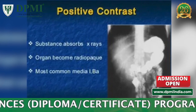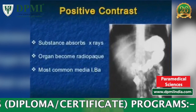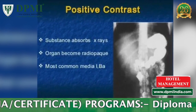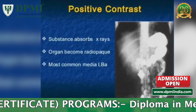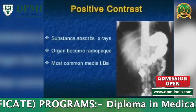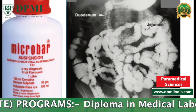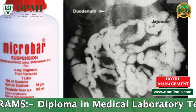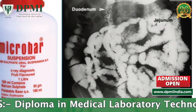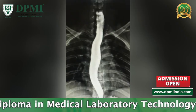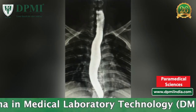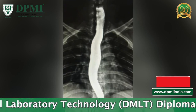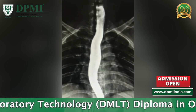Positive contrast media, because of their high atomic numbers, cause an increase in the attenuation of x-rays and are considered to be radiopaque. Contrast agents that are radiopaque contain elements with high atomic numbers such as iodine, bromine, and barium. When these substances are used to fill organs, they essentially make the organ radiopaque and the image appears clear or white on the radiograph.